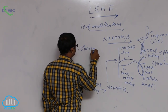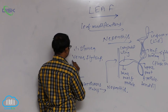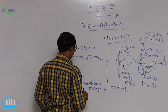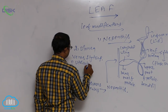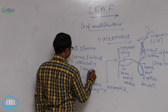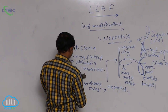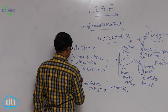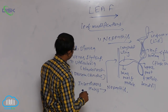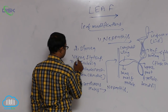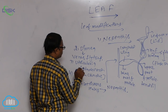Another insectivorous plant is Dionea — special name: Venus flytrap. Third one is Utricularia, a hydrophytic plant — special name: bladderwort. Fourth one is Drosera — special name: sundew. So, four types of insectivorous plants: Nepenthes, Dionea (Venus flytrap), Utricularia (bladderwort), and Drosera (sundew).